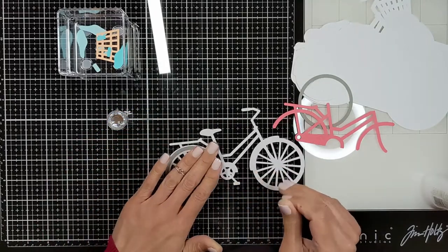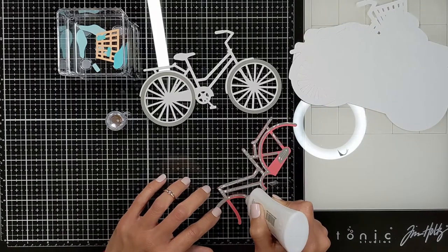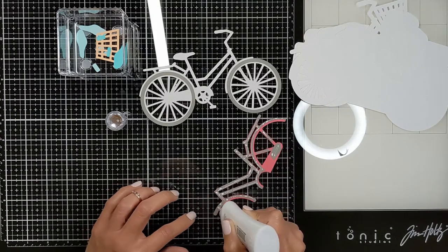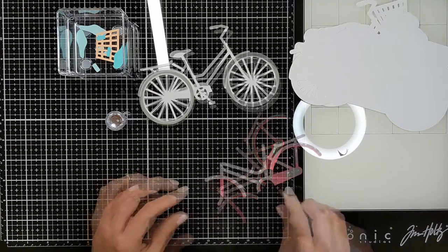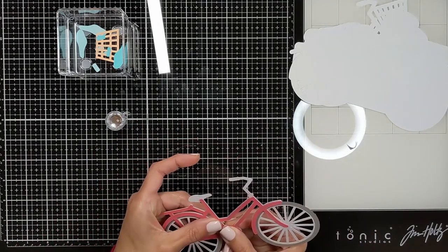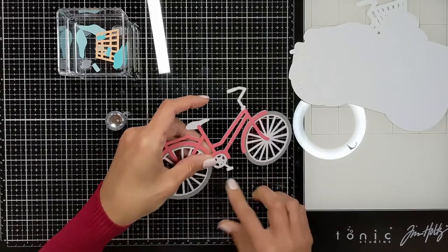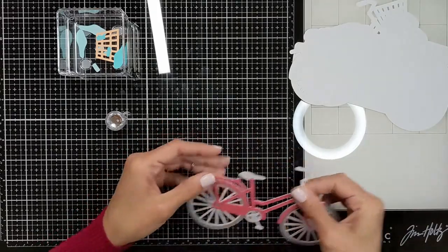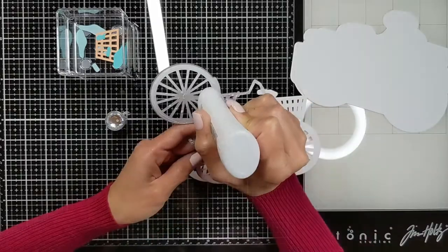Here I'm just using my Nuvo glue so I can attach the pieces together. Here the wheels and then the body of the bike from pink. The colors are brighter than this but this section of the video the lighting is not so amazing. In later parts of the video you're going to see how bright the colors are.